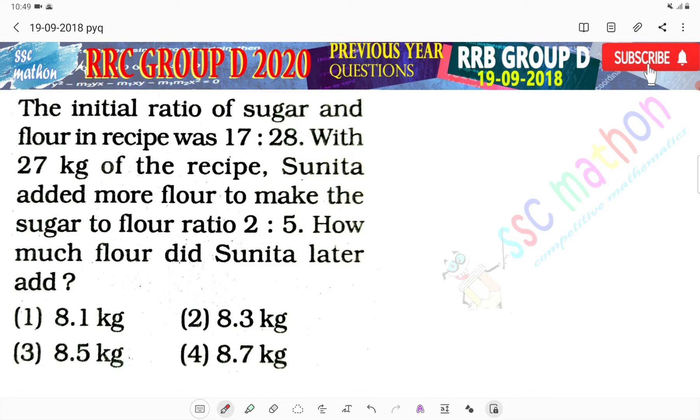The initial ratio of the sugar and flour in the recipe was 17 is to 28 with 27 kg of the recipe. Sunita added more flour to make the sugar and flour in the ratio of 2 is to 5. How much flour did Sunita add? So here do we have this ratio?